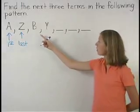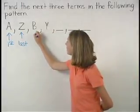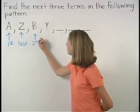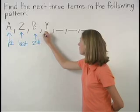Our next two terms are B and Y. B is the second letter of the alphabet, and Y is the second to last letter of the alphabet.